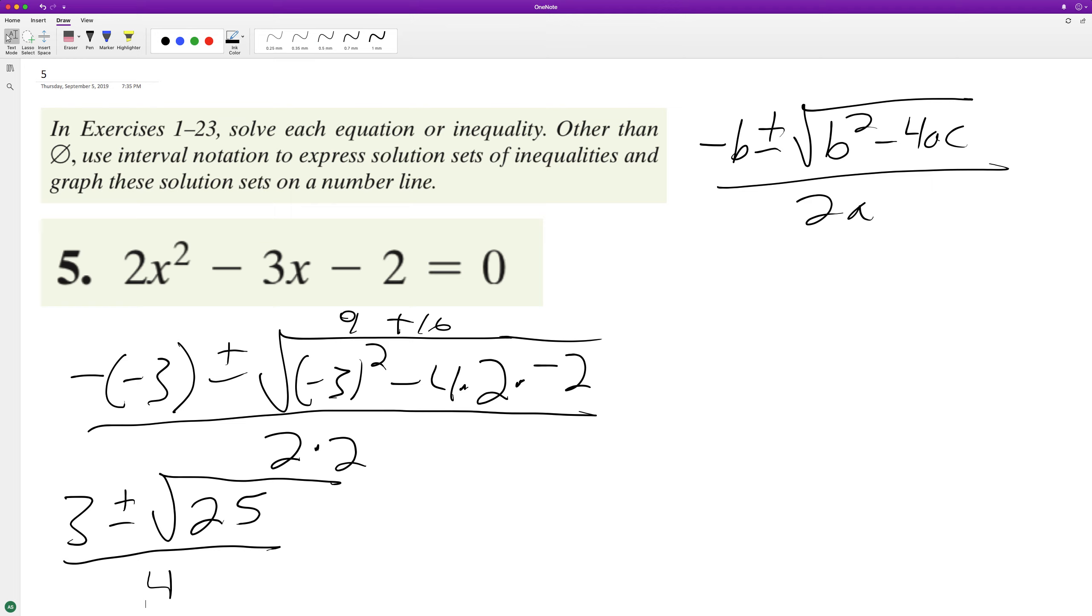So we end up with 3 plus or minus 5 over 4. So this ends up being minus 5, so it's negative 2 over 4 and 8 over 4. So we end up with negative 1 half, which is going to be equal to...